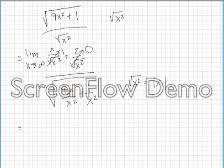9x squared over x squared, which just goes to 9, and this goes to 0.